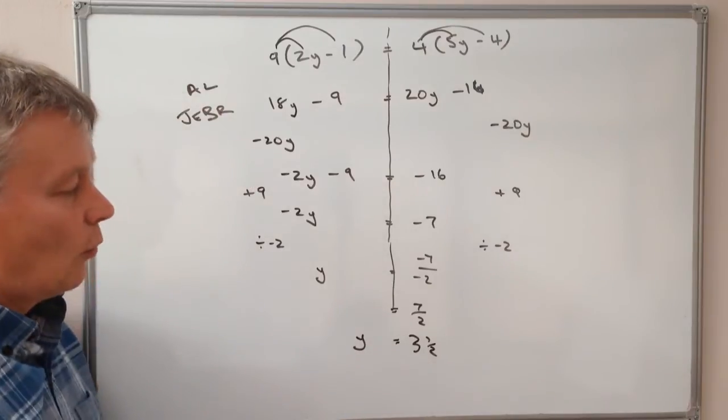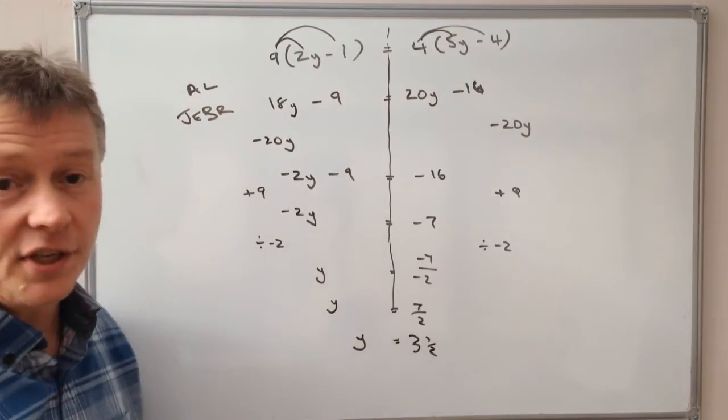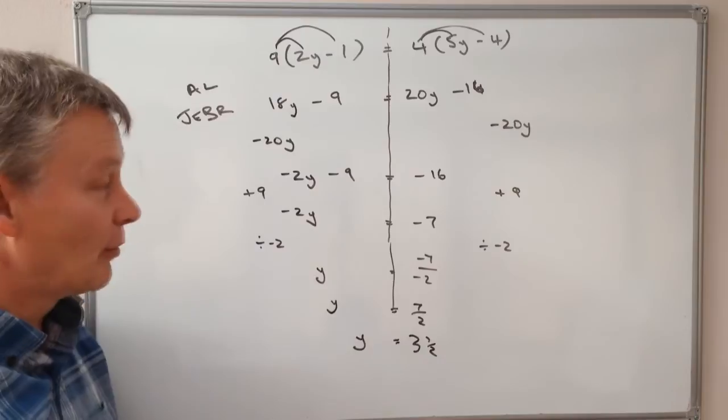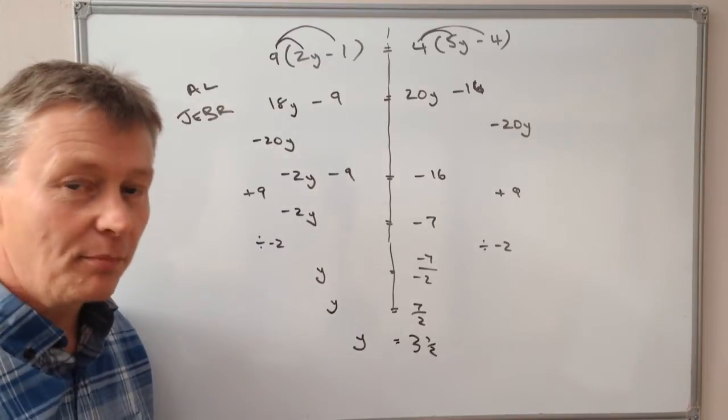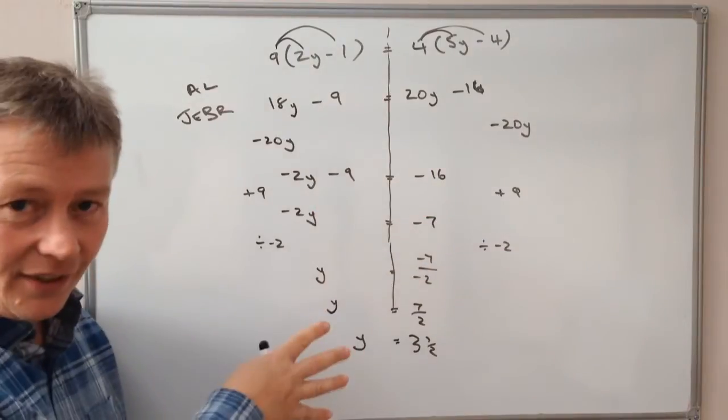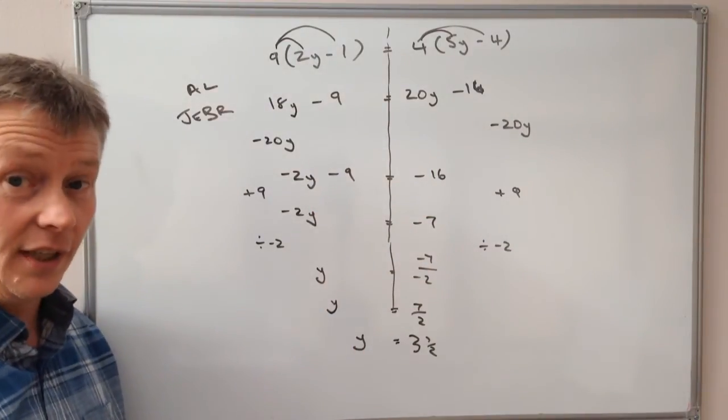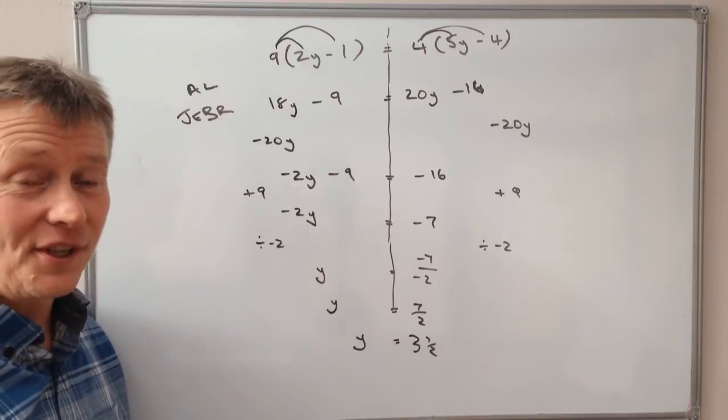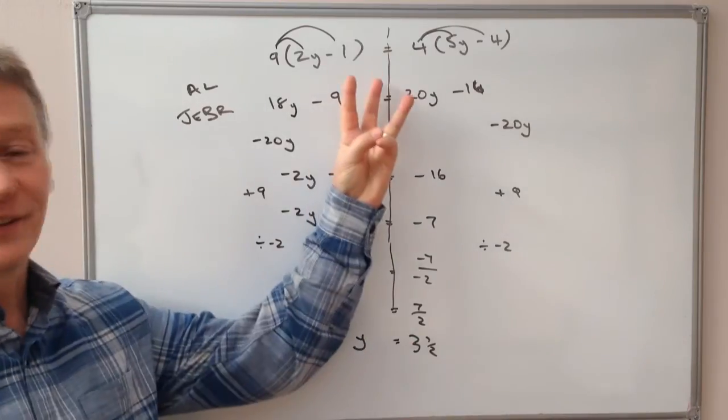So in this equation, y equals 7 over 2, or 3 and a half, or 3.5. I hope that's been helpful. Please have a look at the next video in the playlist where I'll address exactly the same question but do it slightly differently.